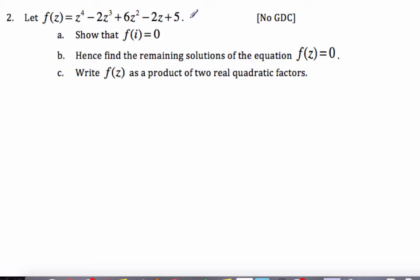And I want to show that f at i is 0. So if I show it, I'm going to plug it in, I get i to the 4th minus 2i cubed plus 6i squared minus 2i plus 5.